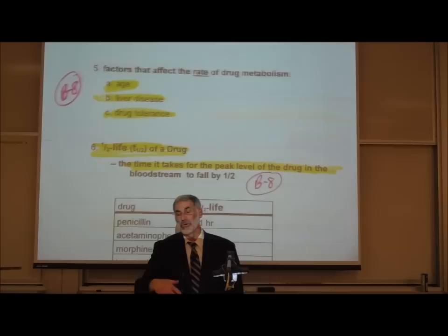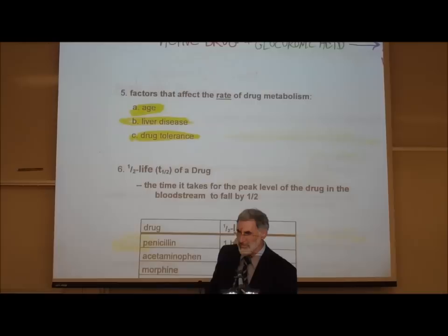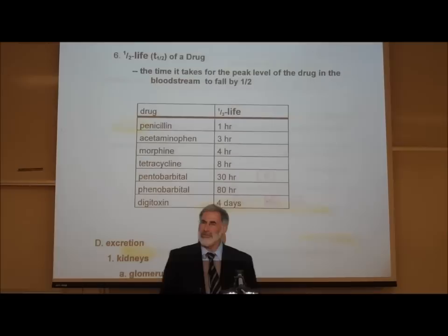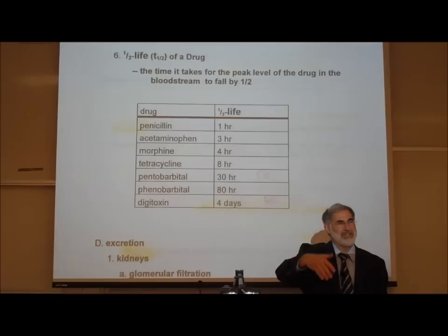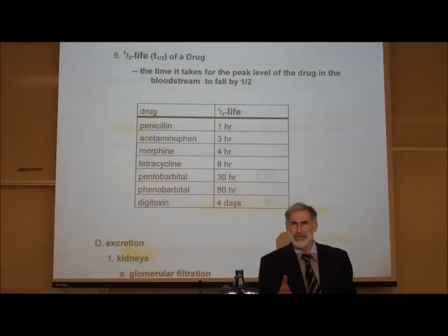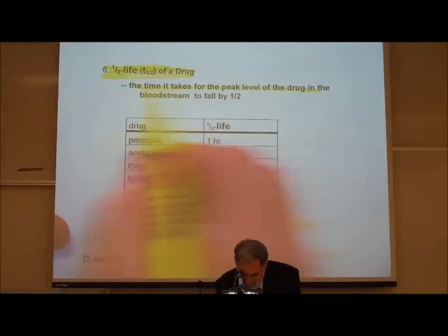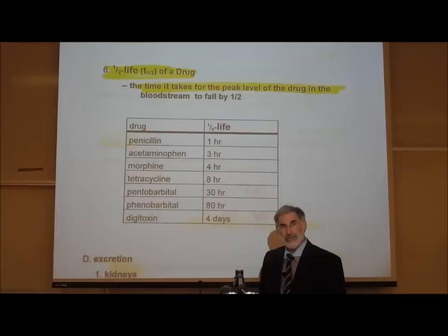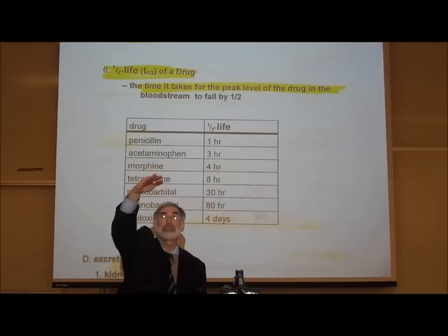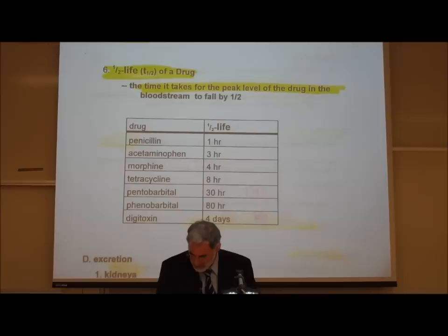One more aspect of metabolism: the half-life of a drug. Some of you have heard that term applied to radioactive isotopes — for example, carbon-14 has a half-life of 5,700 years. The half-life of a drug is the time it takes for the level in the bloodstream to fall by half. How long it takes for the peak level in the blood to drop by half is called its half-life, and then the level progressively continues to drop.